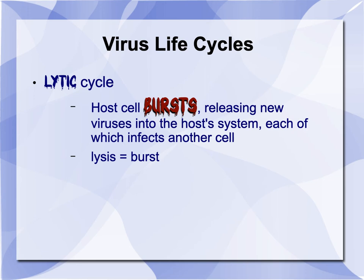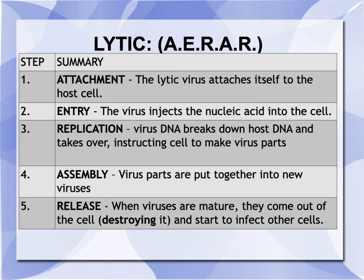Bacteriophages tend to do the lytic cycle — here's the first of the two life cycles. Lytic: the host cell is going to burst, releasing new viruses into the host system, each of which can then infect another cell, coming from the term lysis, meaning to burst. They go through five steps: attach to the host, enter the host, replicate their DNA, assemble their various parts, and then release themselves.